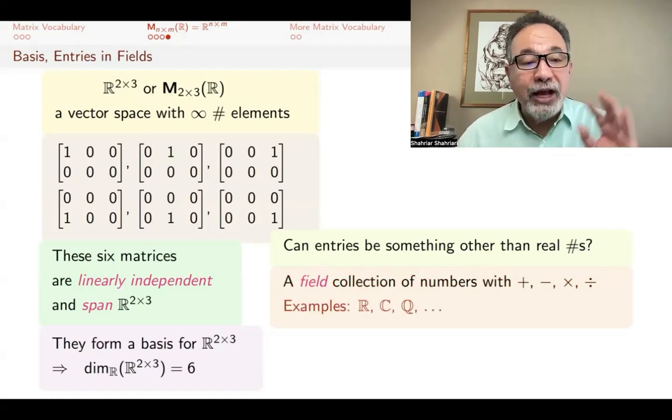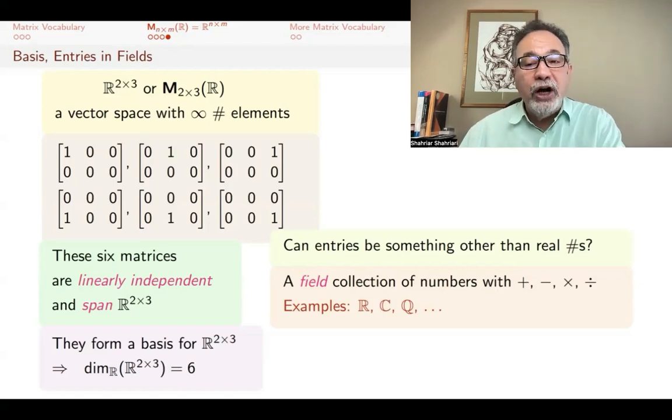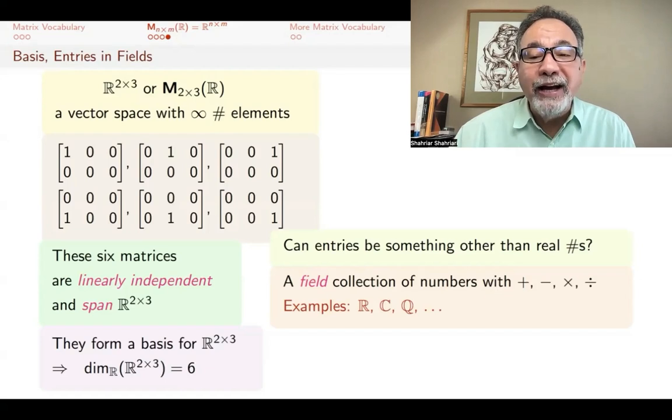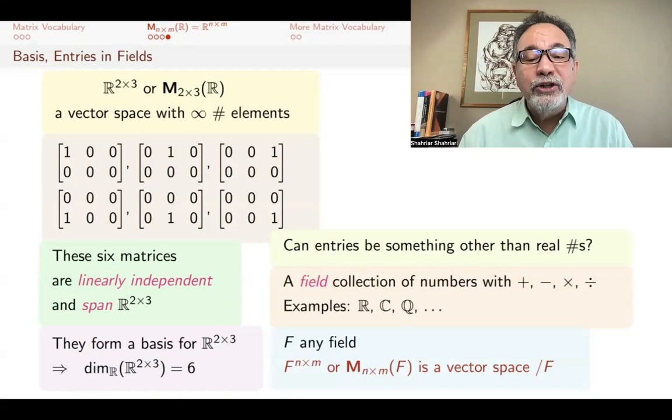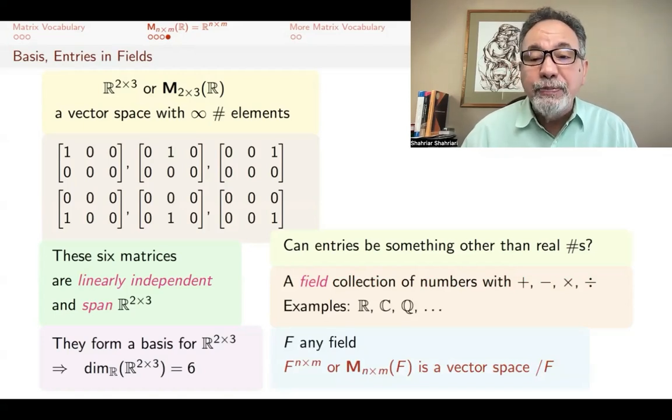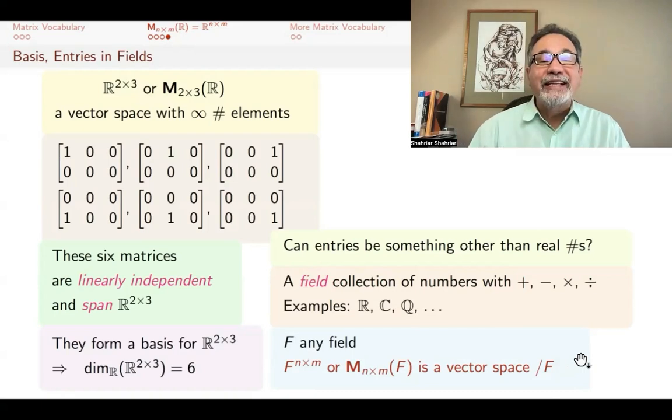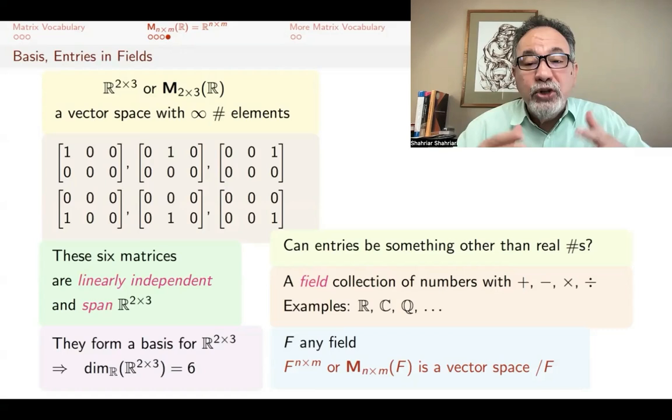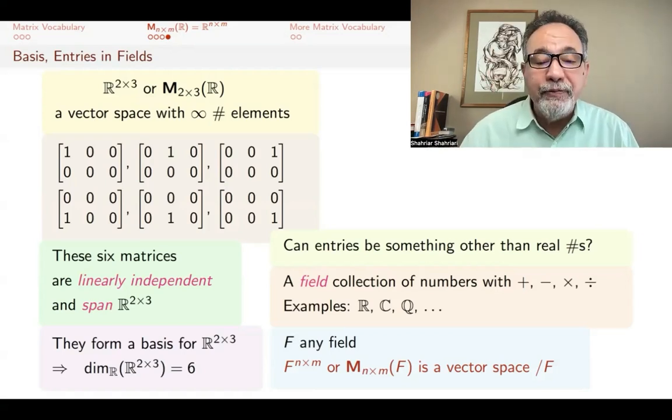Examples are real and complex numbers. I have a whole video on complex numbers are a field. The rational numbers are a field, and there are quite a few other ones. Later in this set of videos, we will talk about finite fields as well. If F is any field, then the n by m matrices with entries in F are a vector space over F. We write it as over F because we want to emphasize that the scalars are coming from this field F. When you have the entries in your matrix come from some other field, like the complex numbers or rational numbers, then you also make sure that the scalars you use come from the same field.